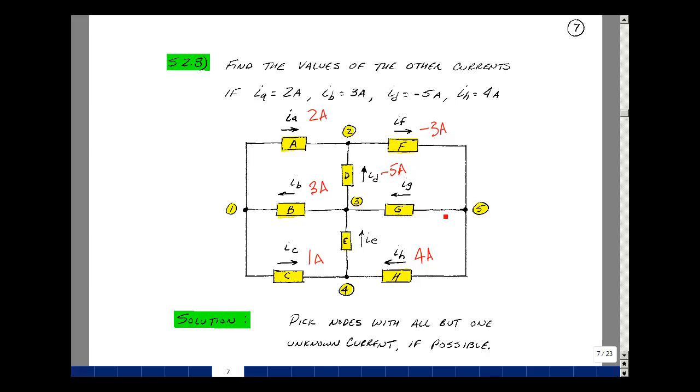We'll set whatever enters the node equals whatever leaves the node, and I have I sub G and 4 amps leaving. So that means that I sub G is equal to minus 7. In other words, minus 3 is entering, and I've got minus 7 plus 4 will be minus 3. So now I know that this current is minus 7 amps.